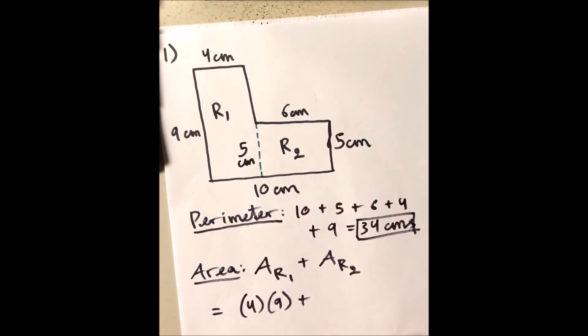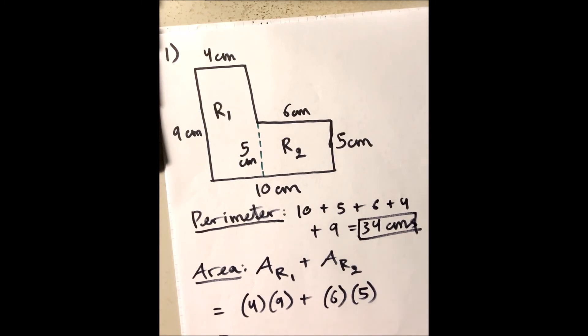Well, 4 times 9 is 36, 6 times 5 is 30. 36 plus 30 is 66 centimeters squared. And that is how we do this problem.